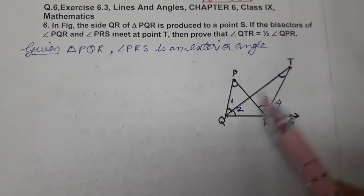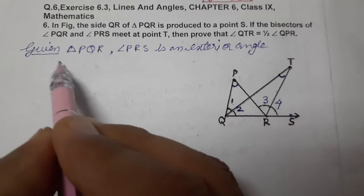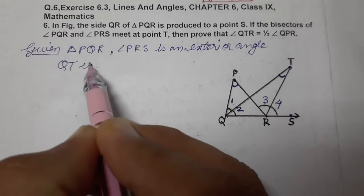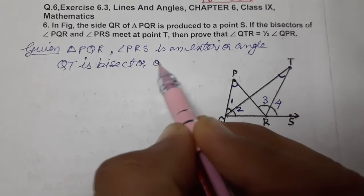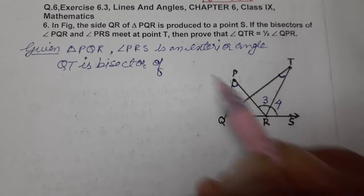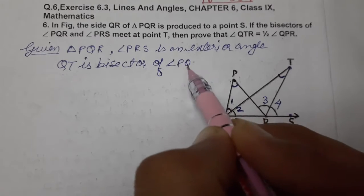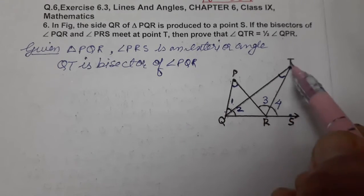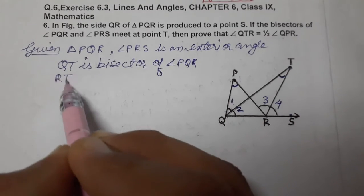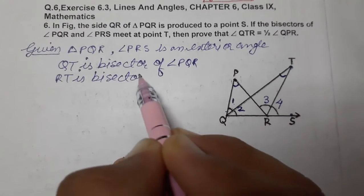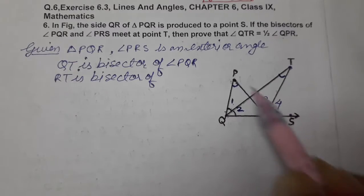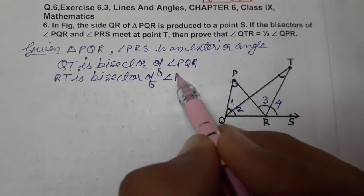QT is bisector of angle PQR. RT is bisector of angle PRS. This is the given information.